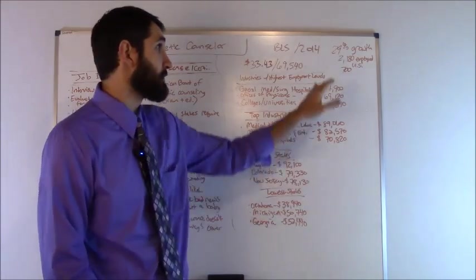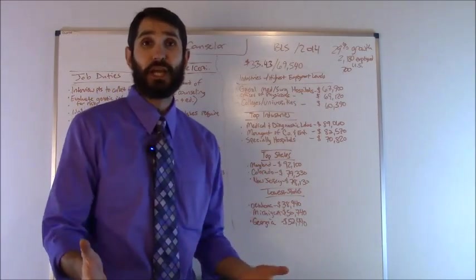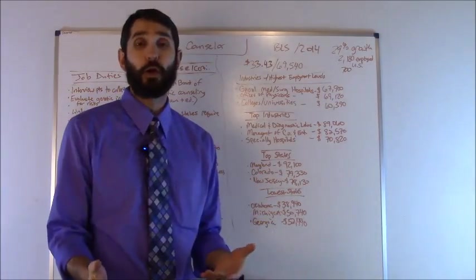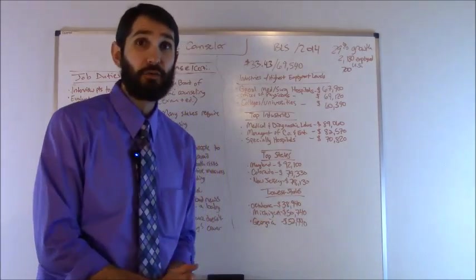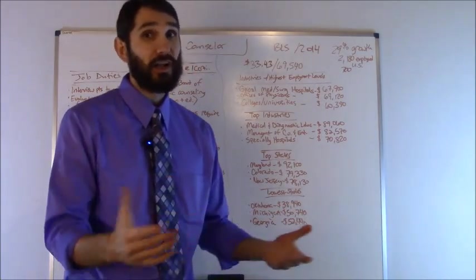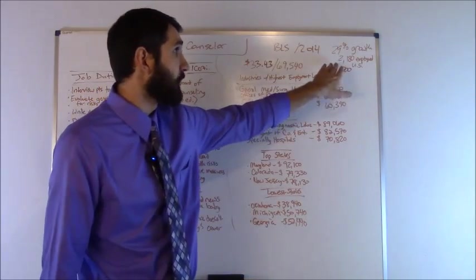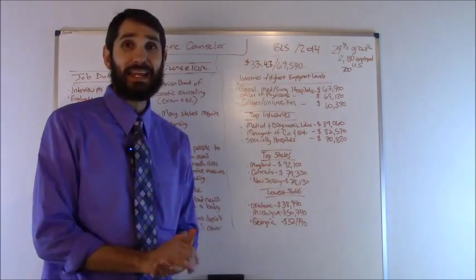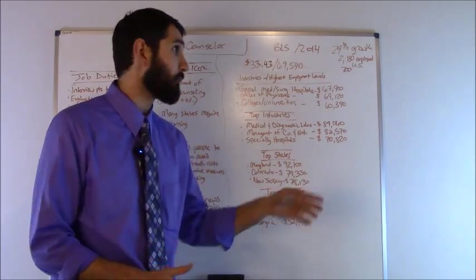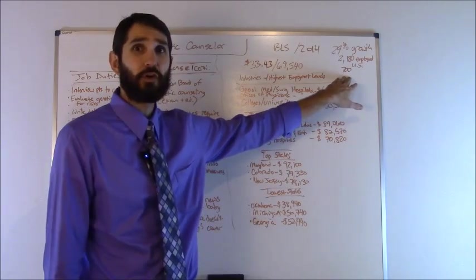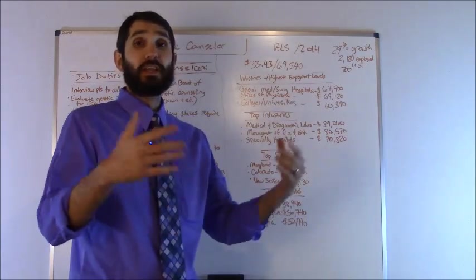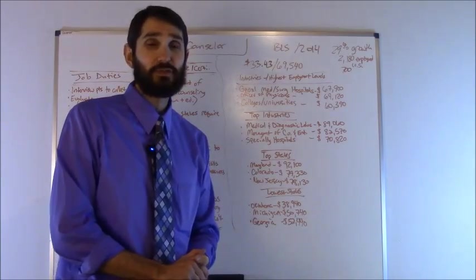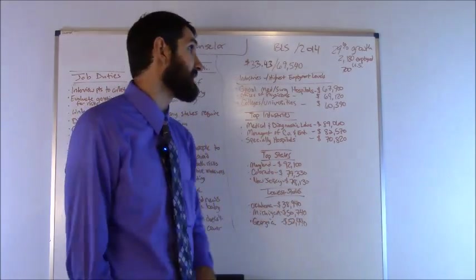The Bureau of Labor Statistics did project a 29% growth rate between years 2014 and 2024. That's really good, right? However, there's not a lot of jobs in the United States. There's only about 2,180 genetic counselors employed as of 2014. There's only going to be about 700 more jobs added between 2014 and 2024. Not a lot of jobs out there, but it is growing, which is a good sign.